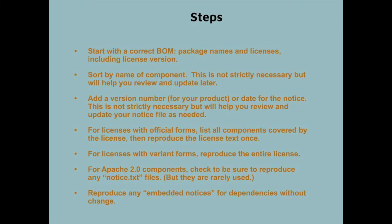Next, I suggest that you add a version number to your notice file — it might correspond with a particular release or version of your product, and when you go back to check or update the notice file later on, you won't have version problems getting confused about which form you're working on. The next step bifurcates for licenses with official forms like GPL and licenses with variant forms like MIT. For official forms, you should list all components covered by the license and then reproduce the entire license text only once, avoiding duplicates.